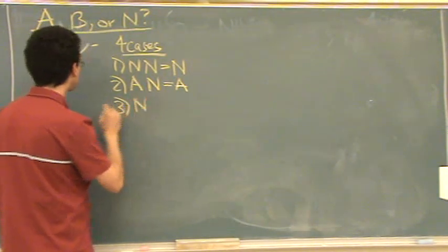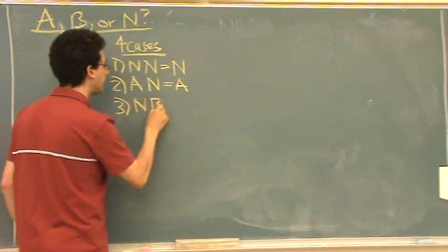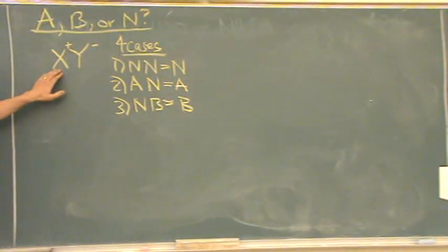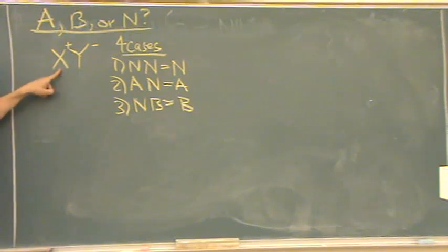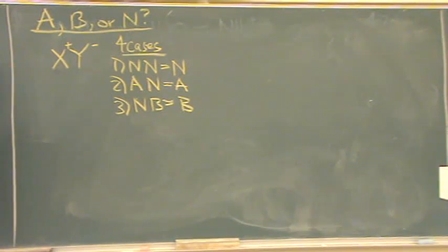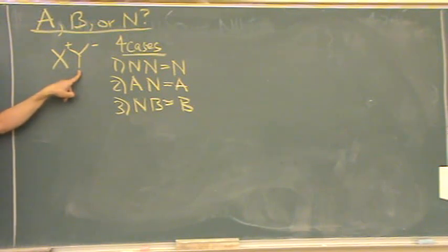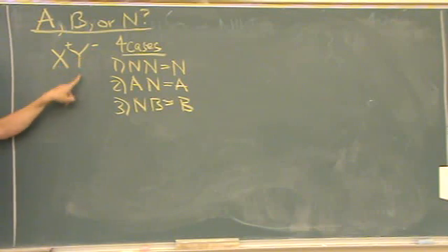Case three: X could be neutral and Y could be basic. In that case, it's basic. Things with a plus charge are going to be acidic, so when we see a cation, we're thinking neutral or acidic — not basic. Things with a minus charge, we usually think base, because a Lewis base is an electron pair donor — that's where the minus charge comes from, it has that electron pair to donate. So we're thinking base or neutral, not acidic for Y.